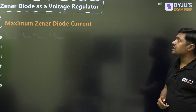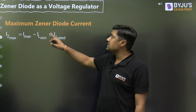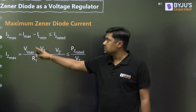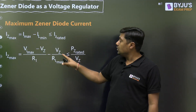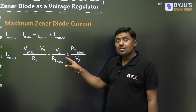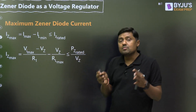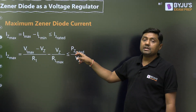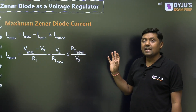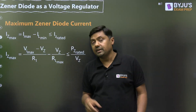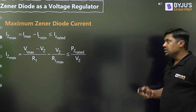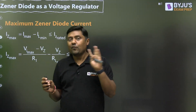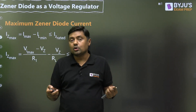The second formula: maximum Zener diode current Iz_max = I_max − IL_min, where I_max = (Vi_max − Vz) / R1 and IL_min = Vz / R_L_max (when load resistance is maximum, load current is minimum). The condition is: Iz_max ≤ Iz_rated, where Iz_rated = Pz_rated / Vz. These two formulas allow you to solve all questions on this topic.